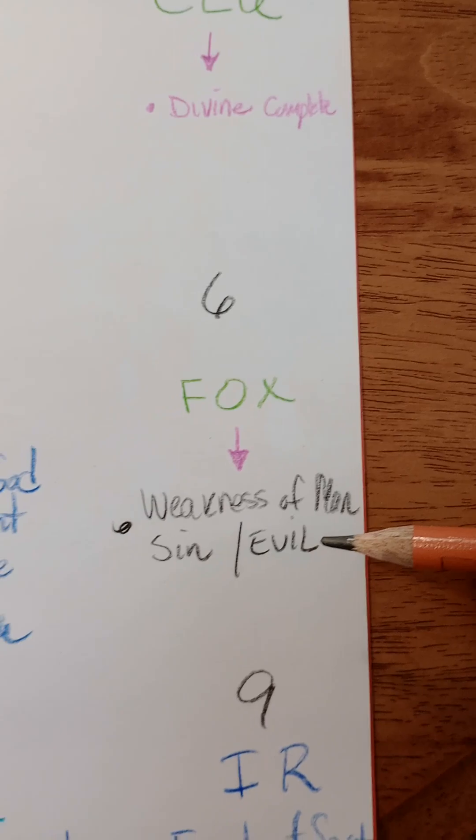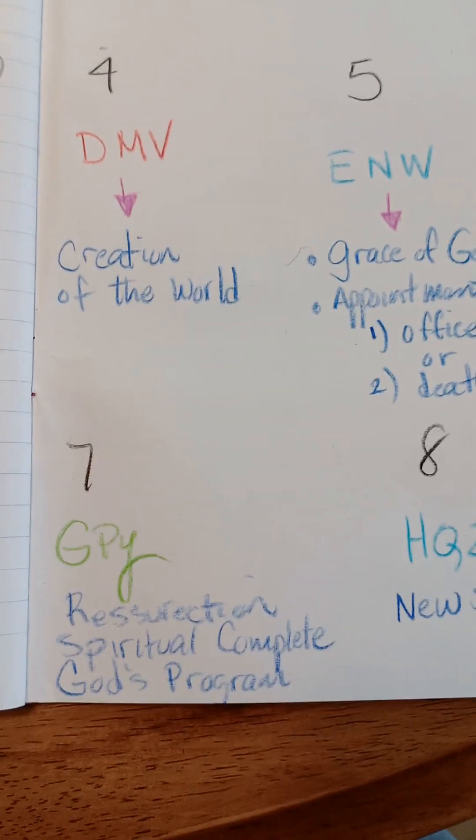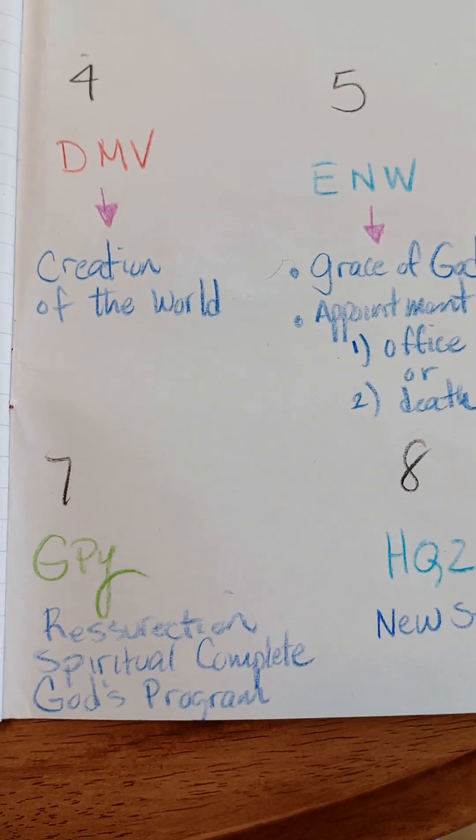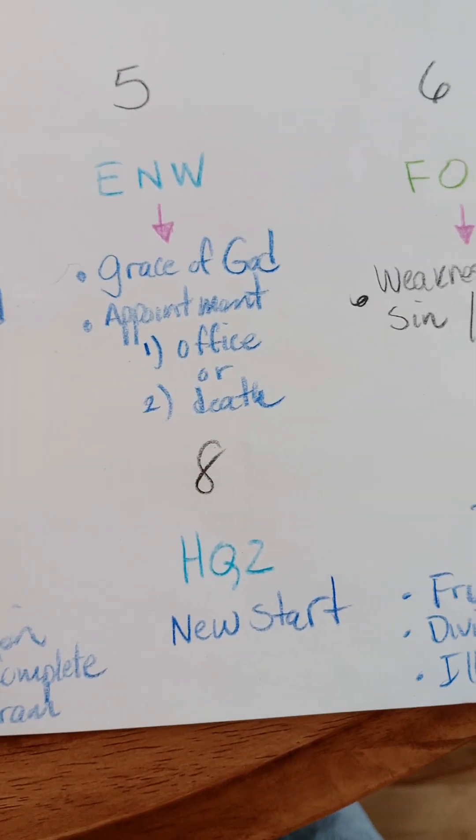Six, weakness of man, sin, and evil. Seven is resurrection or spiritual complete, God's program. Anything that God wants to put a signature on, you'll see a seven around it.